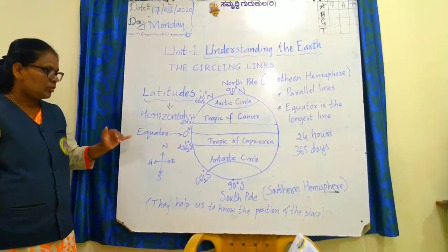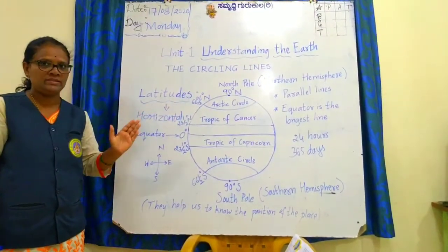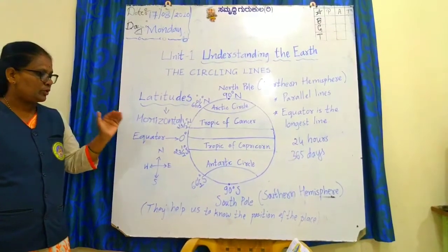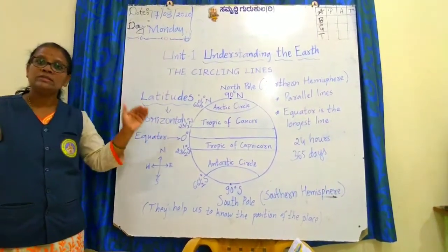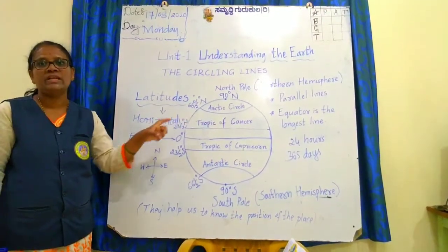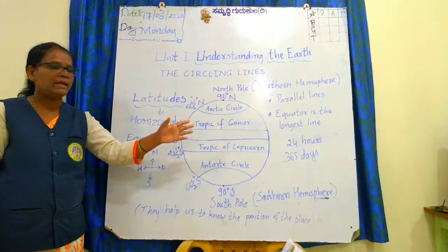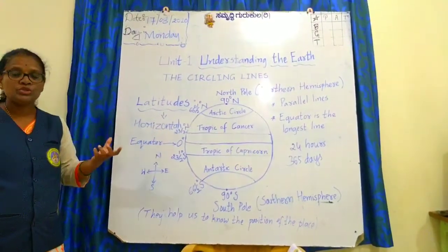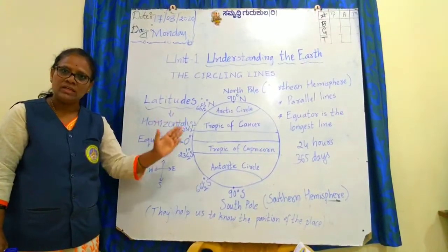The latitudes circle the globe in an east-west direction. They will help us to know the position of a place to the north or to the south of the equator. By seeing the globe, we can identify the position of any place or country — for example, we can say this country lies near the Tropic of Cancer or near the Tropic of Capricorn. These lines help us know the position of places towards north or south of the equator. This is all about the latitudes.